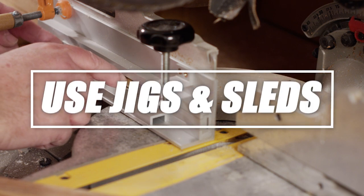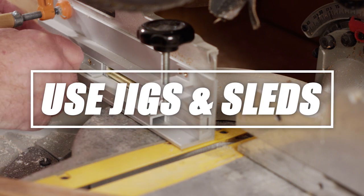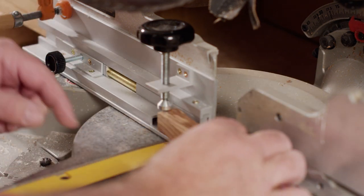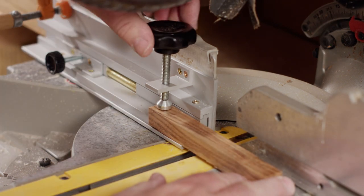When cross-cutting your pen blanks, you can use jigs or sleds with stops to keep your fingers safely away from the saw blades and allow for consistent pen blank lengths.